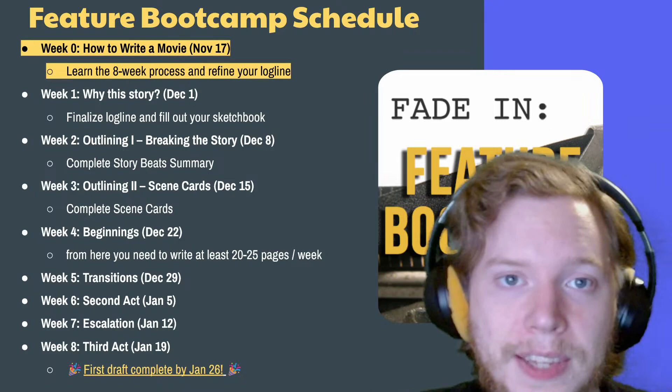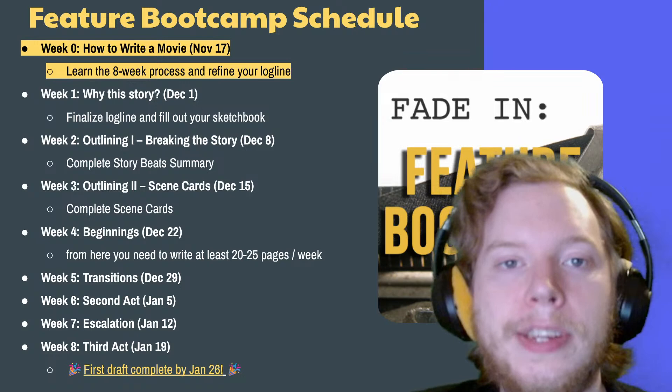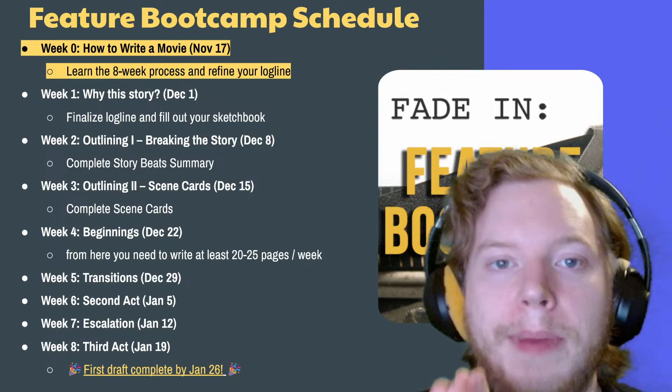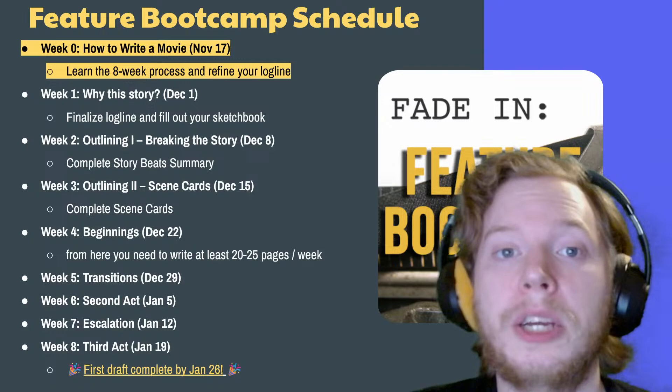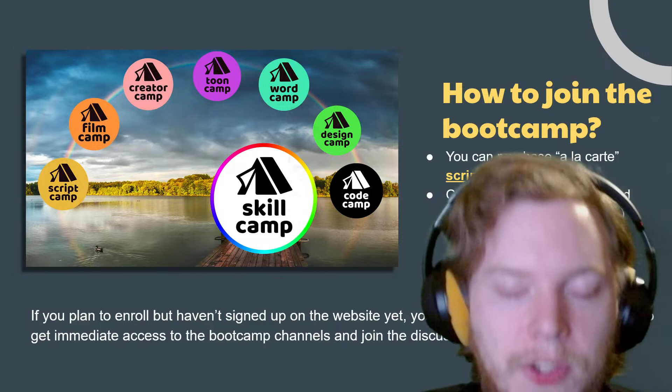If you already have screenwriting software and you're practicing with it, that's fine. But you don't actually need to write a single line of dialogue or format anything at all until week four, which is December 22nd. The first whole half of the class is all about building out a really thorough roadmap, getting organized, and figuring out in theory what happens on every page of your story before you commit it to pages — meaning you move from pre-writing into actually formatting scenes, writing dialogue, and all these things.